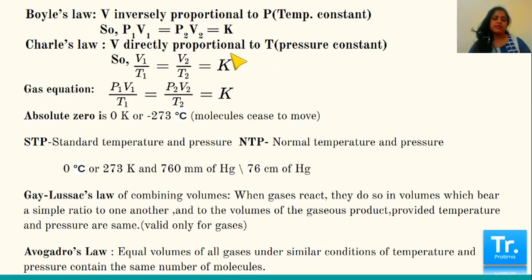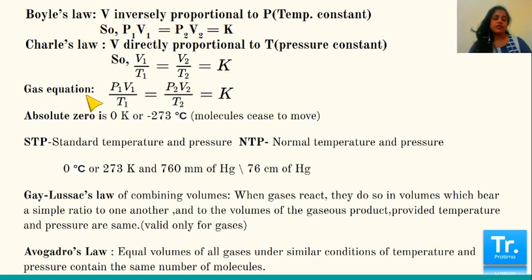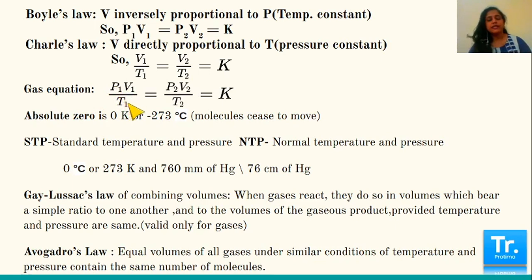On combining Boyle's law and Charles's law, the gas equation states that the volume of a given mass of dry gas is inversely proportional to pressure and directly proportional to temperature. The equation is P1V1/T1 = P2V2/T2 = constant.